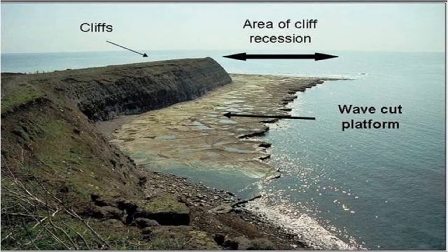Erosional coastlines usually produce a feature known as a wave cut platform. Wave cut platforms are formed after the sediment eroded gets lifted up in tectonic uplifting and deposited on the coast. But wave cut platforms are not the only features created by erosional coastlines. Others include headlands, sea cliffs, sea stacks, and sea caves.